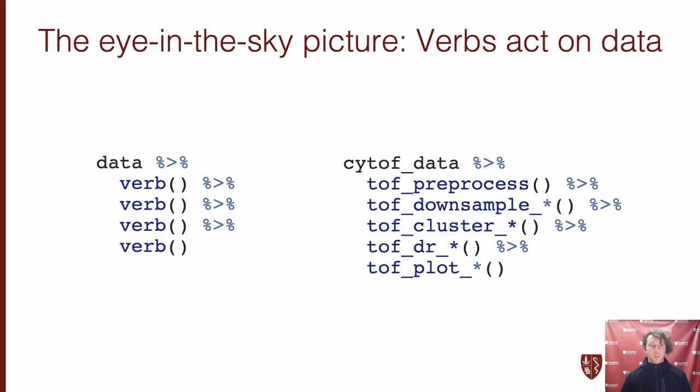TidyTOF then uses this same framework, but in the context of verbs specific for single cell analysis. So for example, you might start with a data frame containing CyTOF data, pipe it into the TOF preprocess function in order to transform each of your protein measurement columns. You can then pipe that into the downsample function if you want to preserve your computational power and only analyze a subset of the cells that you've collected at any given time, and you can continue to pipe the results of those functions into downstream analyses that allow you to cluster, dimensionality reduce, or plot as you see fit.